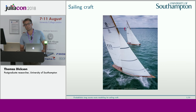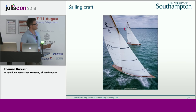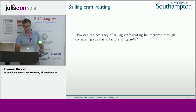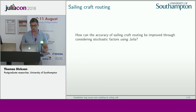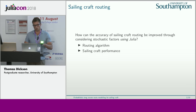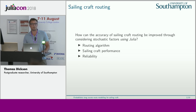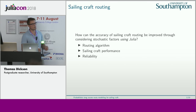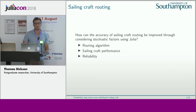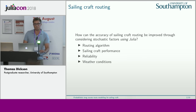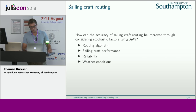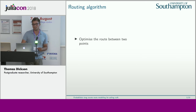What I'm actually interested in is identifying and optimizing the right route for the sailing craft to take. The research question is: how can I improve the accuracy of sailing craft routing by considering stochastic factors using Julia? I'll talk about the routing algorithm I've chosen, and also reliability — the probability that the structure can survive the loads imposed on it — and weather, because if there's no wind we can't go sailing.